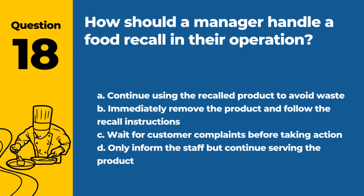Question 18. How should a manager handle a food recall in their operation? A. Continue using the recalled product to avoid waste. B. Immediately remove the product and follow the recall instructions. C. Wait for customer complaints before taking action. D. Only inform the staff but continue serving the product. Answer: B. In the event of a food recall, the manager should promptly remove the affected product from use and follow the specific recall instructions to ensure safety.